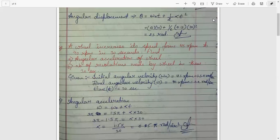Next question: a wheel increases its speed from 45 rpm to 90 rpm in 30 seconds. Find the angular acceleration of the wheel and the number of revolutions made by the wheel in these 30 seconds. Initial angular velocity omega-0 equals to 45 rpm, which I will convert to radian per second: 1.5 radian per second.